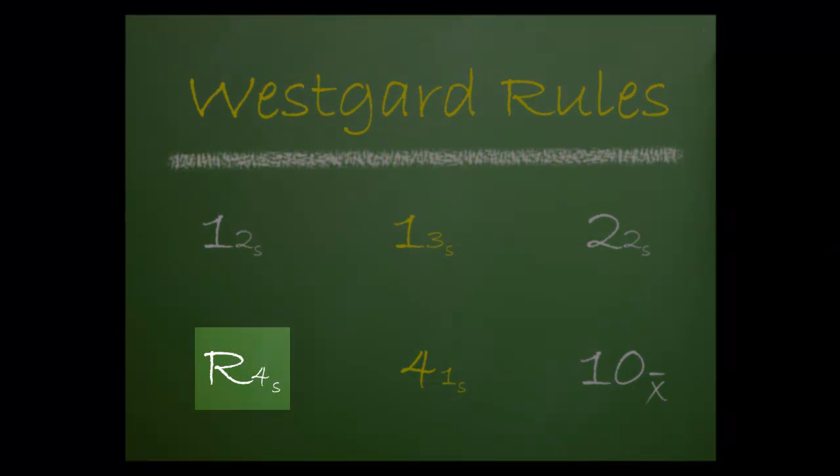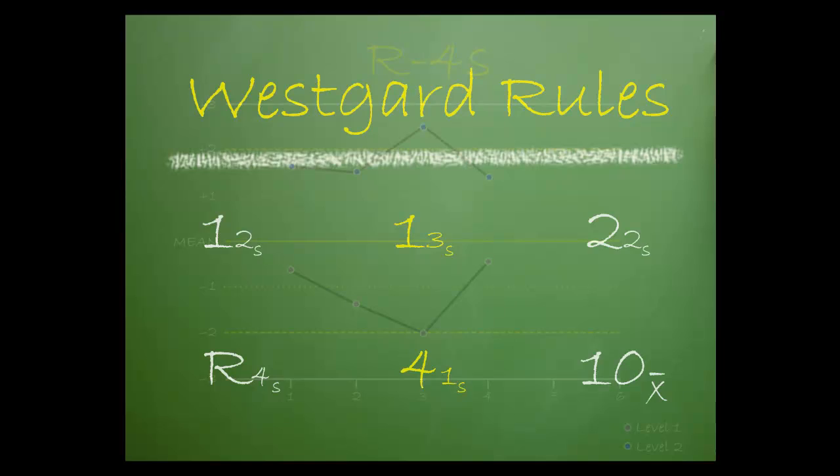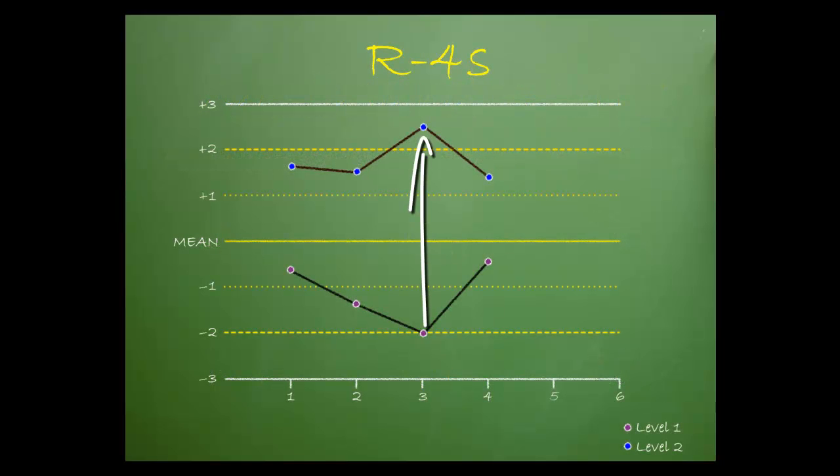R-4-S is the next rule we'll address. This rule is violated if there is at least four SD difference between control values within a single run.